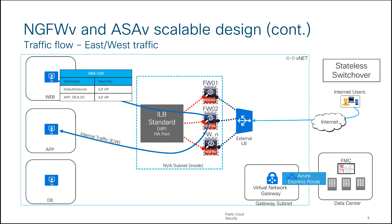Another important use case is east-west traffic, where the web subnet communicates with the application subnet, or the application subnet talks to the database subnet. Again, UDRs forward traffic to the internal load balancer, which picks a firewall from the backend pool and sends traffic to the destination subnet. Return traffic takes the same path because the destination subnet also has a UDR pointing back to the ILB, and the ILB is designed to maintain symmetry — it knows exactly where to send the traffic.